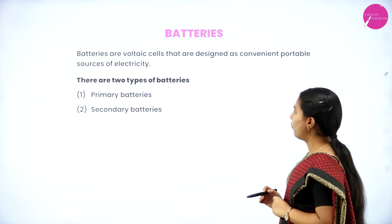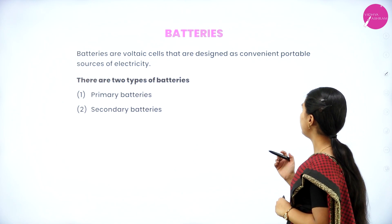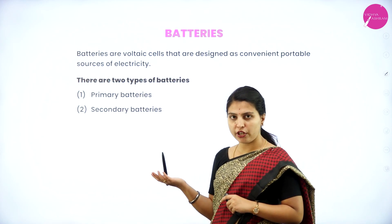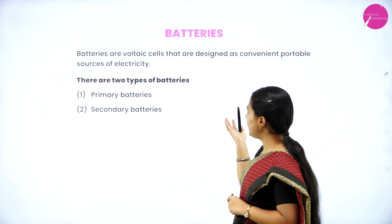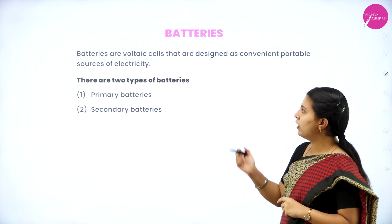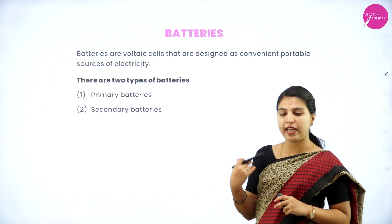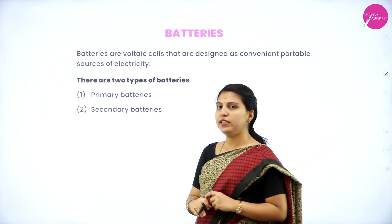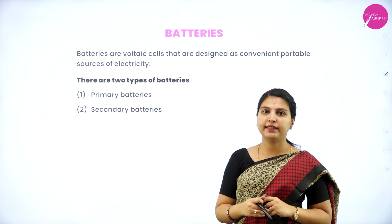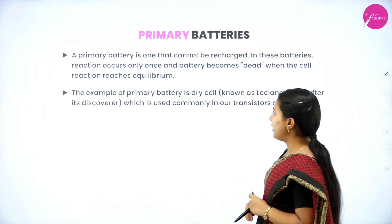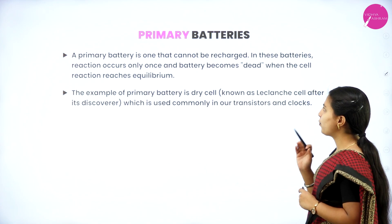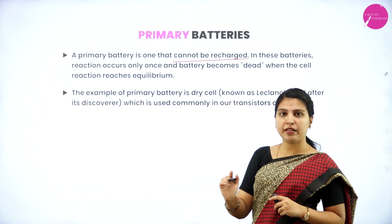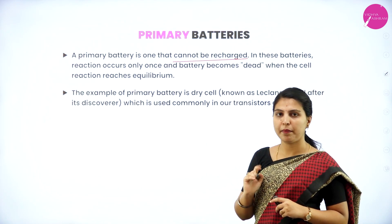Next, batteries. Batteries are voltaic cells designed as convenient portable sources of electricity. There are two types: primary batteries and secondary batteries. A primary battery is one that cannot be recharged — it is a one-time-use battery.